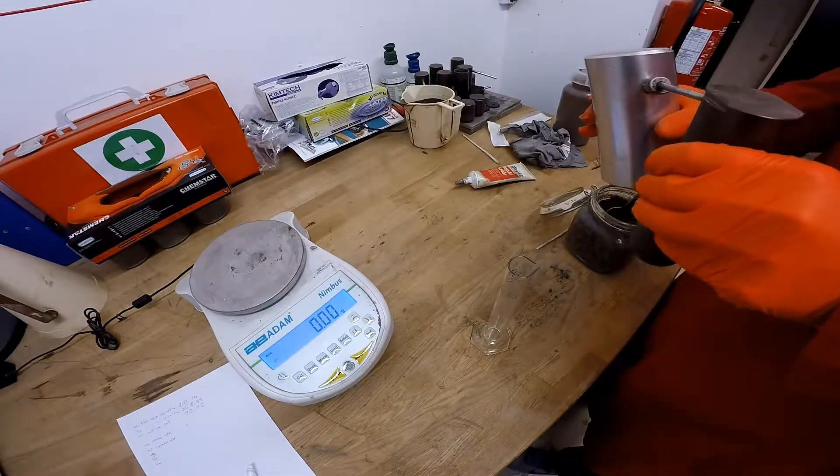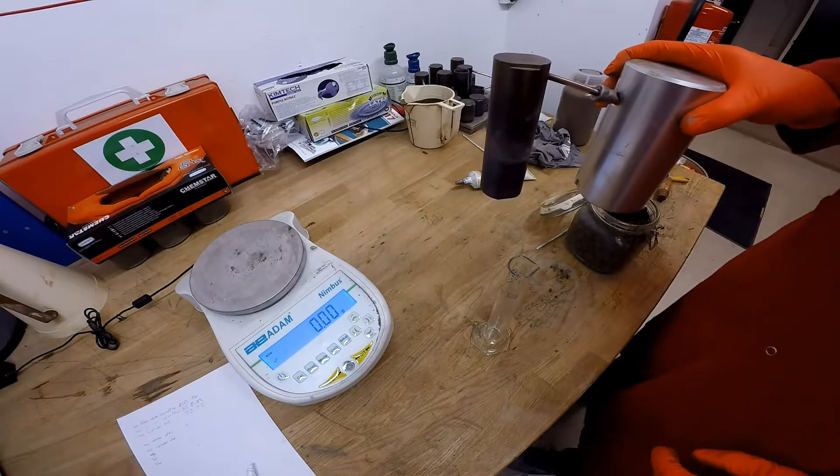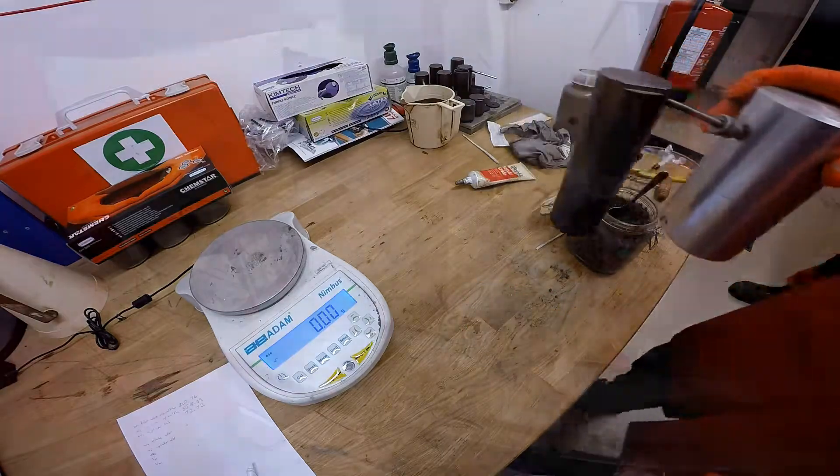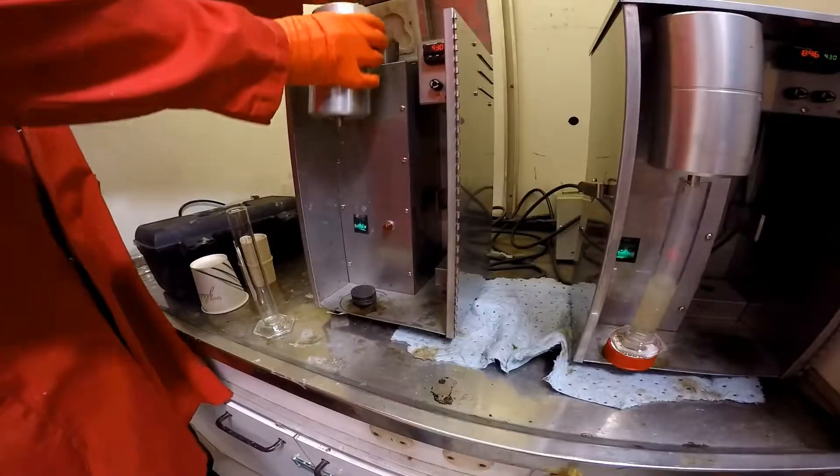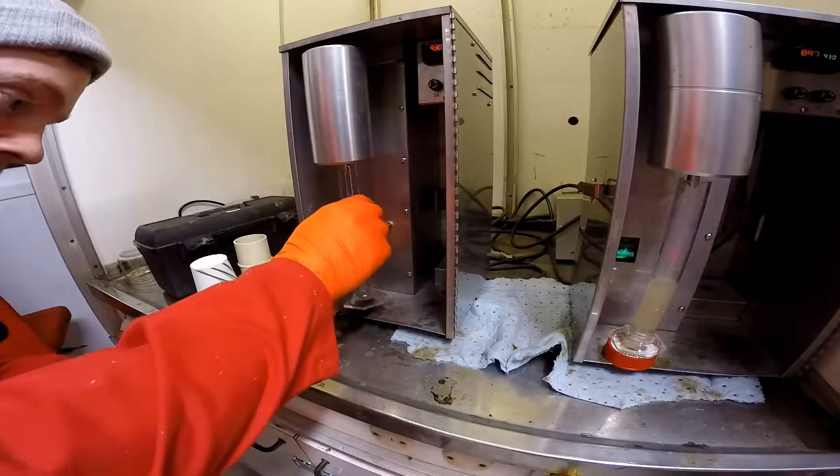Now take the other end of the retort, screw it on. Just put it all the way in, back off a little bit, and screw it on. We'll go put it in the burner. This will take around 45 minutes to an hour to burn.